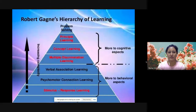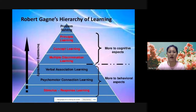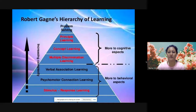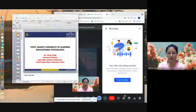In Gagne's hierarchy of learning, as we go up the hierarchy, complexity increases. The simplest form is signal learning at the bottom, while the upper levels involve more cognitive aspects. The lower parts are more based on behavioral theories.